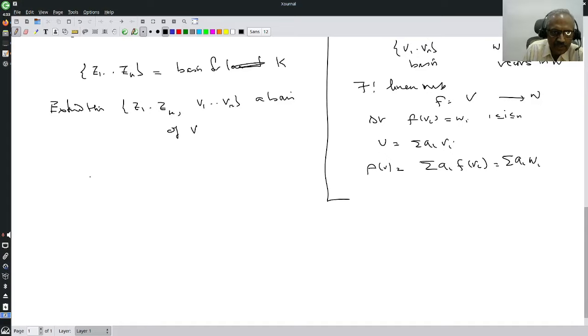Now, how do I define this? Choose a basis W1 to Wr of W1. How do I know this is the same? Remember, dimension of K equals k, dimension of W1 equals r, then we know k plus r equals n, where n is the dimension of V. Therefore, I have to add only r many vectors to get a basis. Do you understand this?